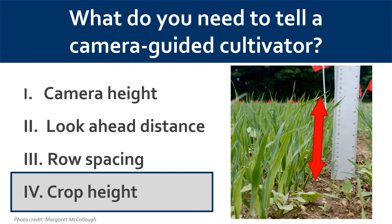Once this information has been uploaded to the console, it can also be saved. Therefore, if conditions don't change, a grower can, for example, select their barley setting and get right out into the field and cultivate.